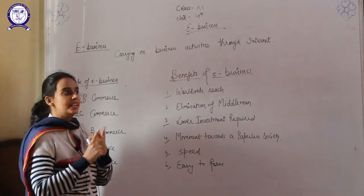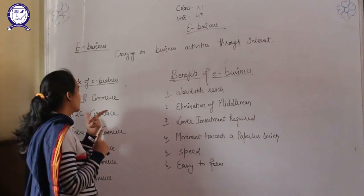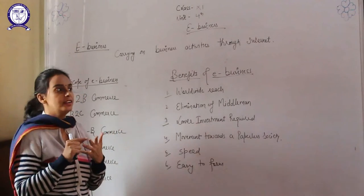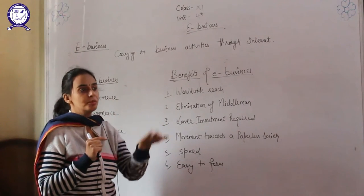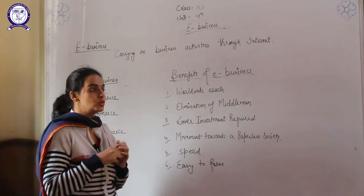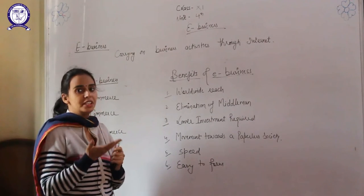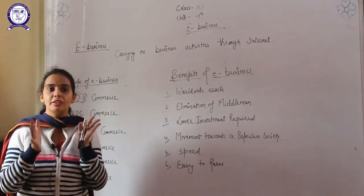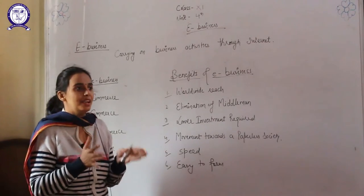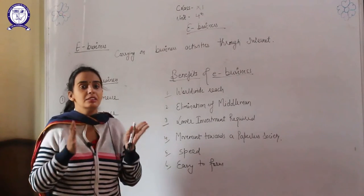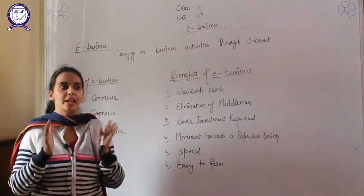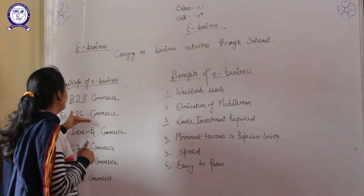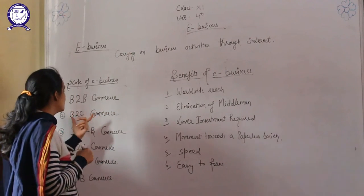Suppose one firm is giving an order of raw material to another firm over email — this is known as B2B commerce. Here one firm is giving a contract or taking details from an advertising agency to promote their product. So the dealing between two business firms with the help of the internet, mail, or fax is known as B2B commerce.